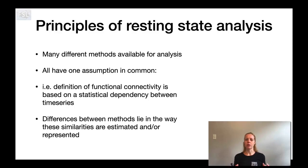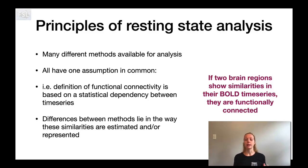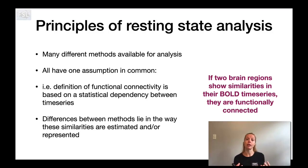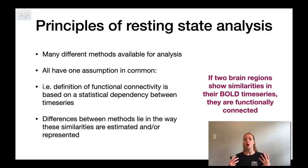There are a large number of different analysis approaches developed to analyze resting state fMRI data, and that can be a little confusing. But it's useful to realize that they all share one common assumption: if two brain regions show similarities in their BOLD time series, then they are functionally connected. Therefore, the definition of functional connectivity is really a statistical concept — a statistical dependency or relationship between the measured time series of separate regions. The differences between all the methods lie in how these similarities are estimated or represented.